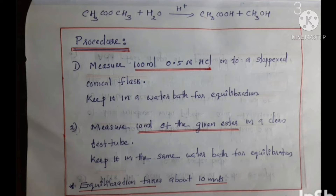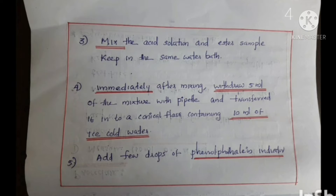First, measure 100 ml of 0.5 normal HCl into a stoppered conical flask and keep it in a water bath for equilibration. Take a clean conical flask, measure another 100 ml of 0.5 normal HCl, and transfer it into that flask. Keep it in the water bath for equilibration. Then measure 10 ml of the given ester in a clean test tube and keep it in the same water bath. Within 10 minutes, equilibration will take place. After that, mix the acid solution and the ester sample and keep the reaction mixture in the same water bath.